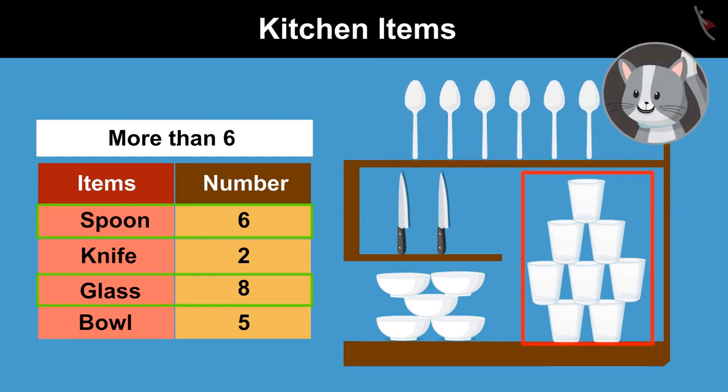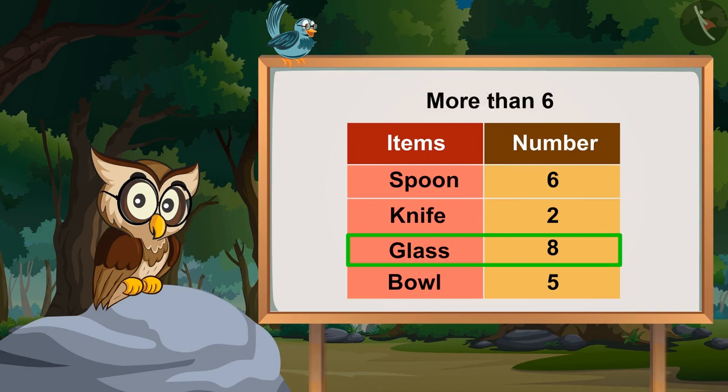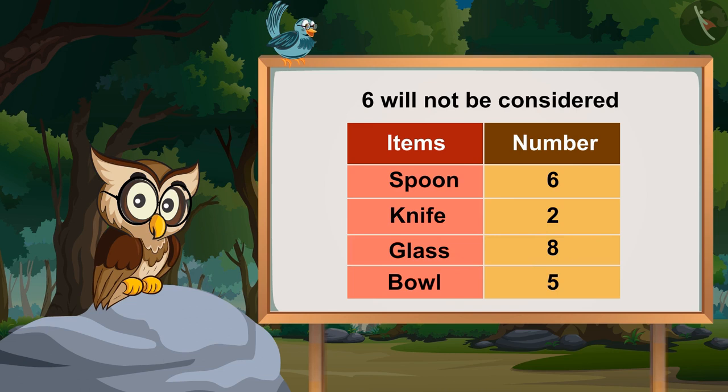Spoon and Glass. Is it the right answer? I think just the glass, because you asked more than 6, therefore we cannot consider 6. Absolutely right. While counting more than a particular number, the number itself is not considered.